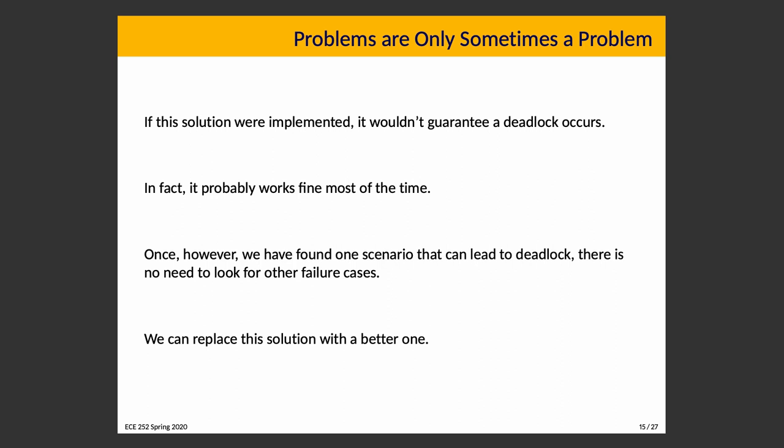The problem with this kind of concurrency issue is that a problem is only sometimes a problem. If you implemented the pseudocode as real code and ran it, you'd probably find it works okay most of the time. But once you've found the failure scenario — either by analysis or runtime observation — you know there's a problem and you need to address it. People sometimes ask if a program that works 95% of the time is enough. No — you wouldn't buy a calculator that gave the wrong answer 1% of the time. We should replace any solution with a failure case with a better one.